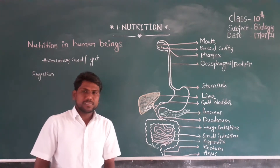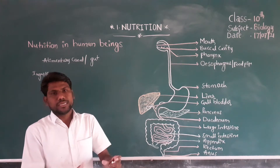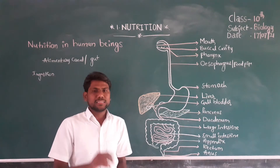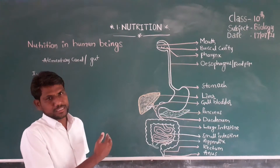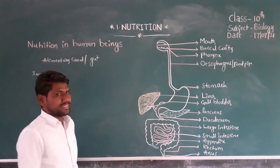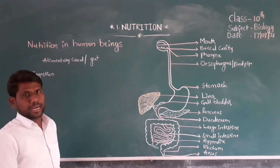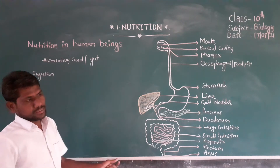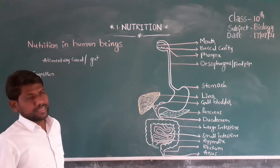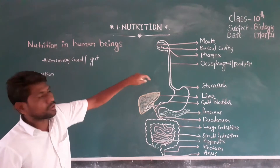Good morning students. In the previous class we already discussed what is heterotrophic nutrition and what are the types of nutrition. In heterotrophic nutrition it is divided into three types: saprophytic nutrition, parasitic nutrition, and holozoic nutrition. We already discussed saprophytic nutrition, with examples mushroom and molds. Next, parasitic nutrition — examples include lice, leech, and cuscuta plant. Next, holozoic nutrition — examples include amoeba, Paramecium, and animals including human beings.